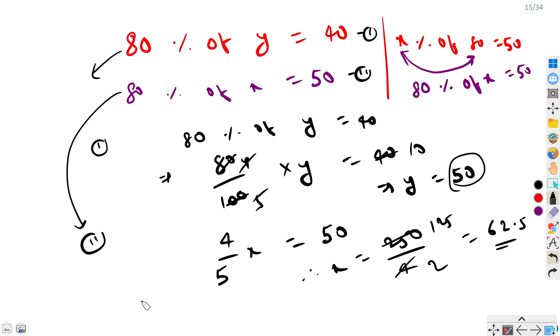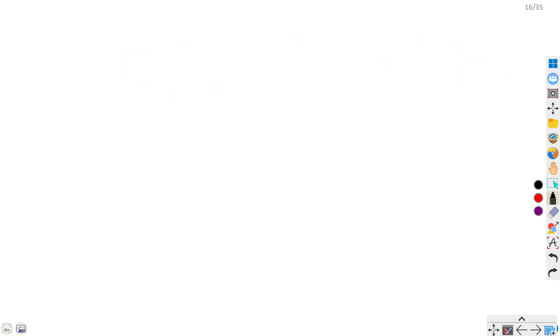We have 50 and 62.5. Now here we can use various methods. I can say more than two basic things. The easiest way would be to take the difference of these: 12.5 is the difference, divided by 50, times 100. So from here we get 25.